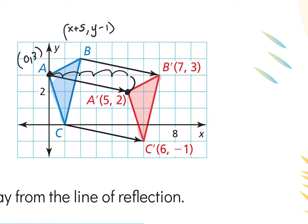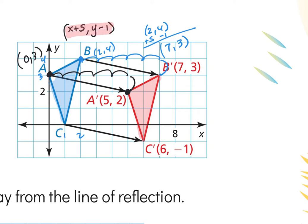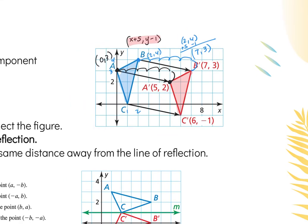Every other point should move the same way. If I take B, which is at coordinate point 2, 4, it should go right 5 and down 1. You can count it on the coordinate plane or use the physical points — add 5 to the X and subtract 1 from the Y to get the new coordinate point. When it asks for the rule, that's what it means: X went right 5, so plus 5; Y went down 1, so minus 1. The same change has to be done for all the vertices — it could be a triangle, quadrilateral, or hexagon, but all points change the same way.